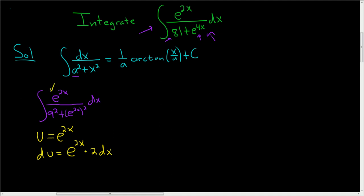In our integrand, we don't have a 2, so we'll divide both sides by 2. And so this leads us to 1 half du equals e to the 2x dx.